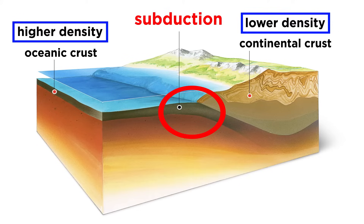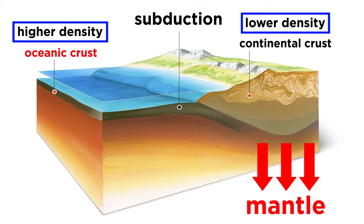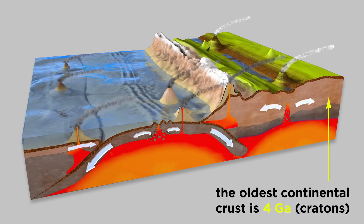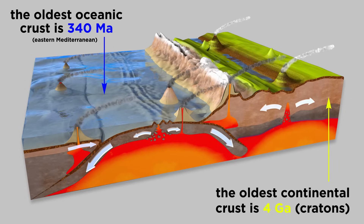Therefore, when a piece of oceanic crust collides with continental crust, the oceanic crust slides beneath the continental crust in a process called subduction. The subducted oceanic crust will then sink deeper and deeper into the mantle until eventually reaching the bottom of the mantle. Oceanic crust is constantly being subducted and therefore destroyed. There are large areas of ancient 4 billion year old continental crust called cratons, but the oldest oceanic crust is only 340 million years old.